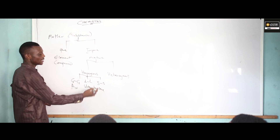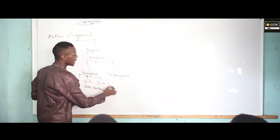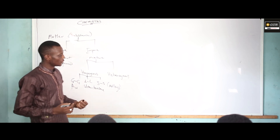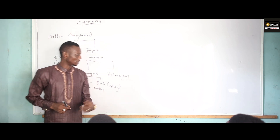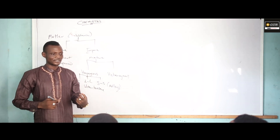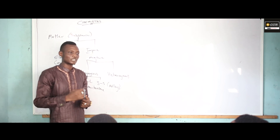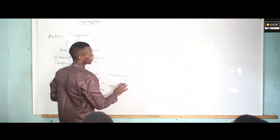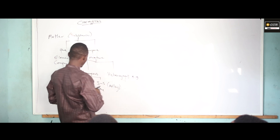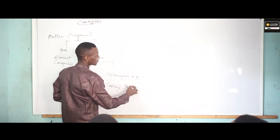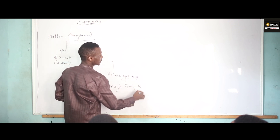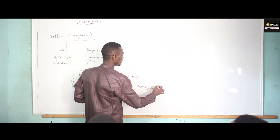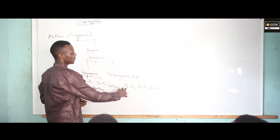Solid and solid examples are alloys. Heterogeneous mixtures are mixtures which have their constituents in different states of matter — for example, gas mixed with liquid, gas mixed with solid, and solid mixed with liquid.